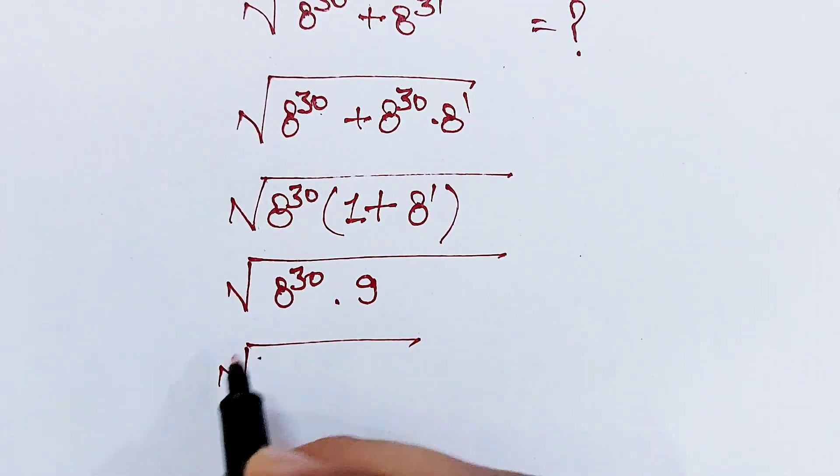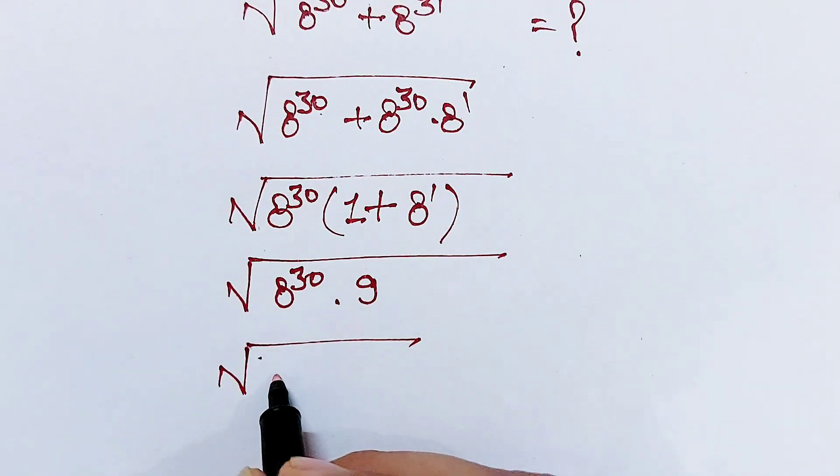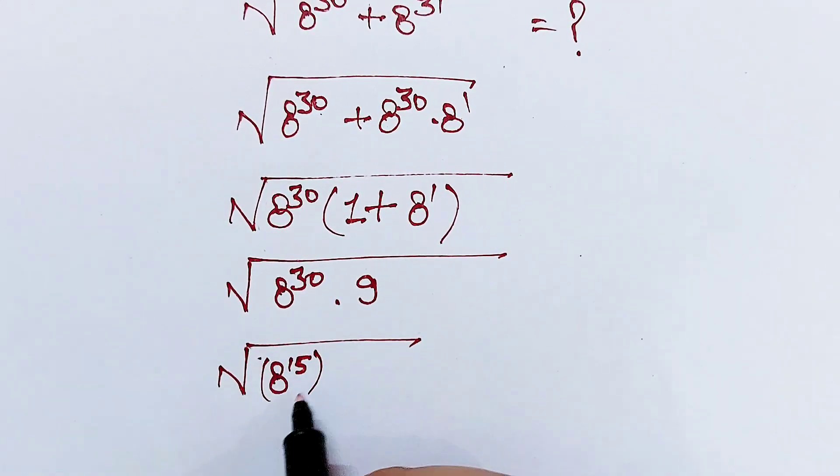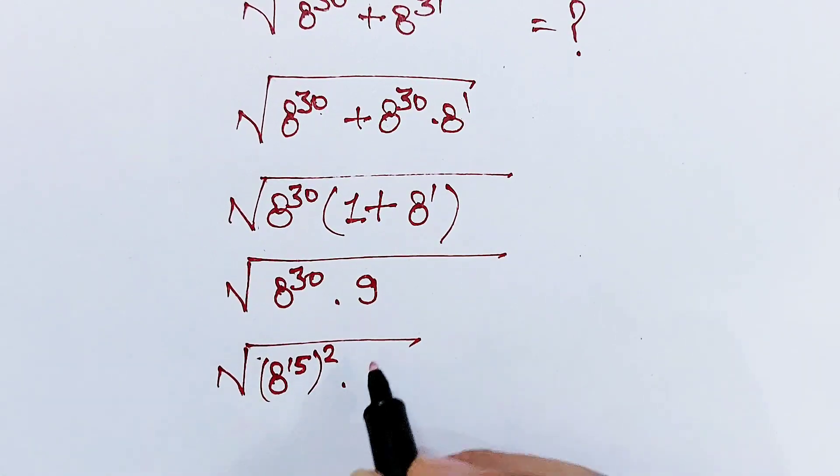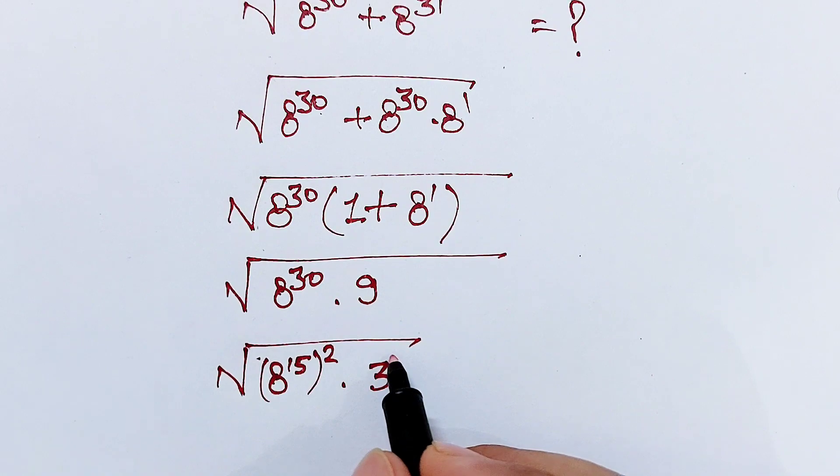This 8^30 is the same as (8^15)^2, and this 9 is the same as 3^2.